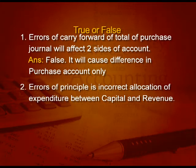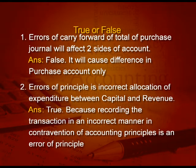Next question: error of principle is incorrect allocation of expenditure between capital and revenue. The answer is true, because recording a transaction in an incorrect manner in contravention of the accounting principle is an error of principle.